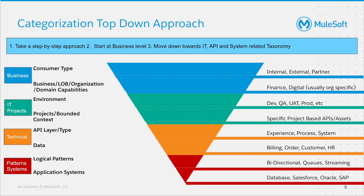The business layer is split into two: consumer type and their business. The second layer, IT, is split into environment and bounded context. The third layer, technical, is split into API layer and data. And the last layer, pattern systems, is split into logical patterns and application systems.